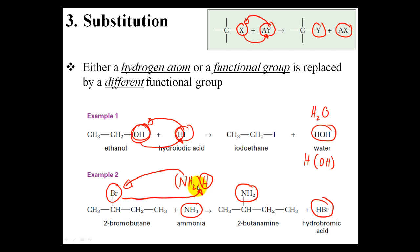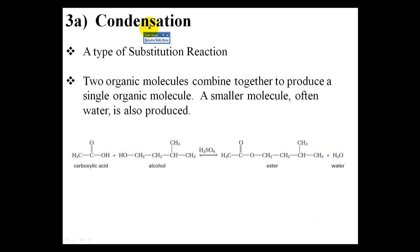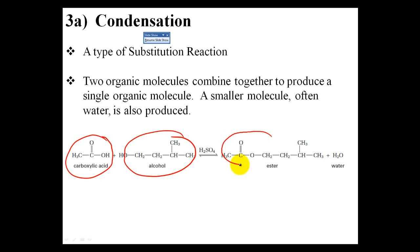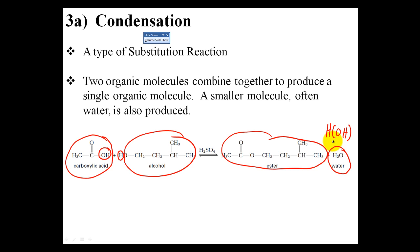Don't worry too much right now — just go with the flow. Once we get over the first 30 percent of these reactions you'll find it gets very repetitive and you will begin to see these patterns. The next reaction is a subcategory of substitution reactions — condensation. In a condensation reaction, two organic molecules — in this case a carboxylic acid and an alcohol — combine together to produce a single organic molecule, one large ester, and normally a smaller molecule, generally water, is popped out. Again the hydroxyl group combines with the hydrogen to form water, HOH.